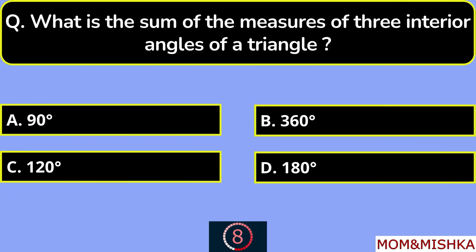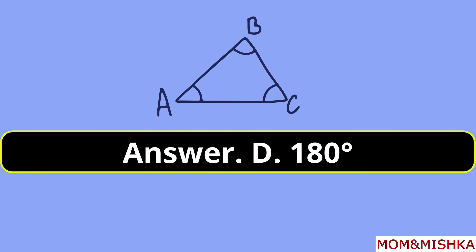What is the sum of the measures of the 3 interior angles of a triangle? The answer is 180 degrees. Option D.